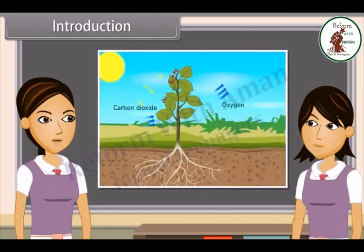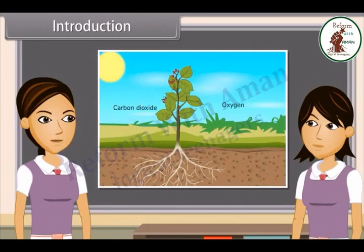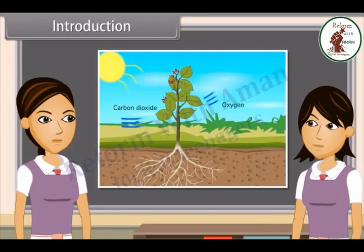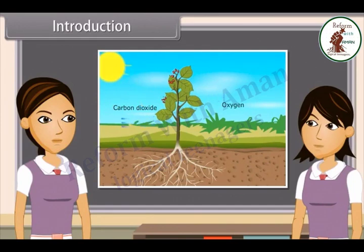The basic functions performed by living organisms to maintain their life on this earth are called life processes. Since living organisms perform various functions to maintain their life, energy is required to perform these functions. They get this energy from outside the body in the form of food.